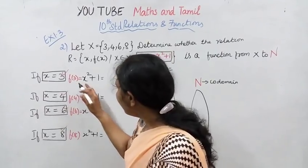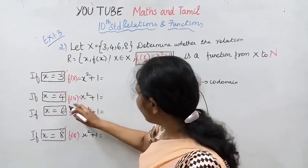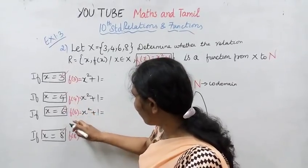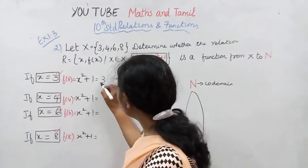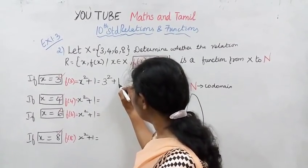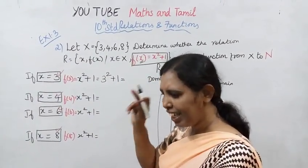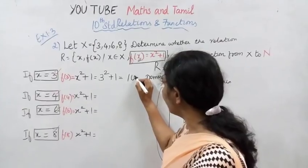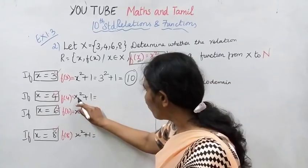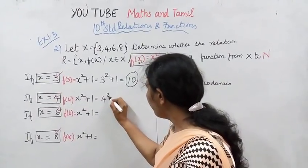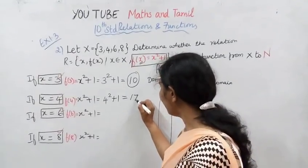So f(x) = x² + 1. For x = 3: f(3) = 3² + 1 = 9 + 1 = 10. For x = 4: f(4) = 4² + 1. 4 fours are 16, plus 1 = 17.